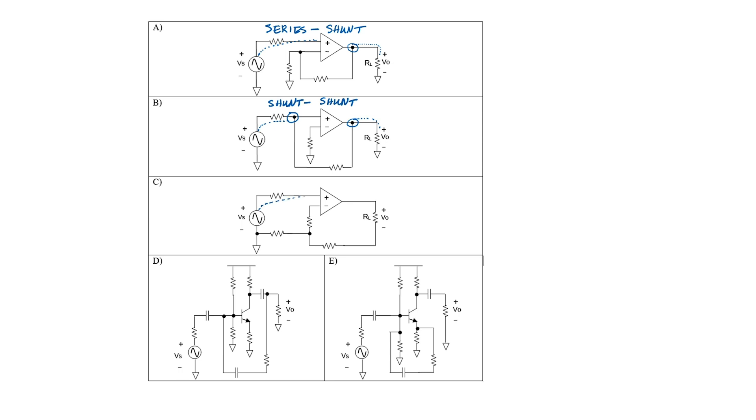In example C, I don't cross the feedback path at all on either side of the amplifier. This is series-series feedback.